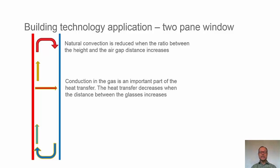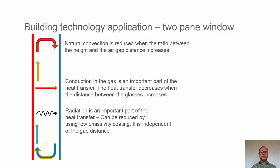We do have the conduction in the gas. It's an important heat transfer phenomena. If we put in a noble gas like argon instead of air, we will bring down the heat transfer in that way. We know from the previous slide that radiation is important. In a two-pane window, we can reduce this radiation by using low-emissivity coatings. This part is independent of the gap distance.